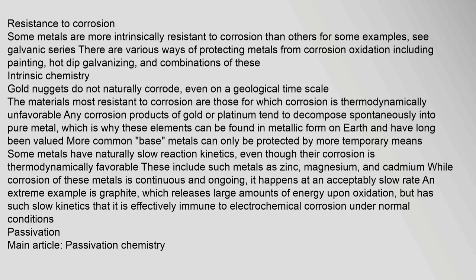More common metals can only be protected by more temporary means. Some metals have naturally slow reaction kinetics, even though their corrosion is thermodynamically favorable. These include zinc, magnesium, and cadmium. While corrosion of these metals is continuous and ongoing, it happens at an acceptably slow rate. An extreme example is graphite, which releases large amounts of energy upon oxidation but has such slow kinetics that it is effectively immune to electrochemical corrosion under normal conditions.